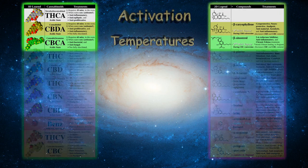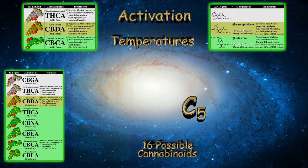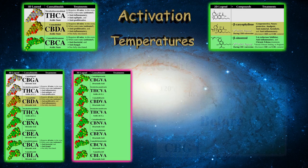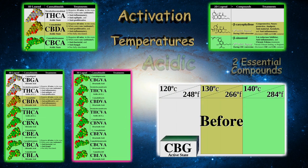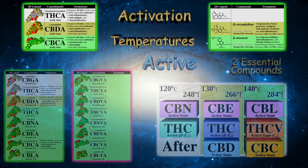At the top of the charts, there are three activation temperatures that convert some of the 16 possible acidic compounds with minimal degradation. Note during any activation process that some cannabinoids may be lost or degraded through their natural boiling points.